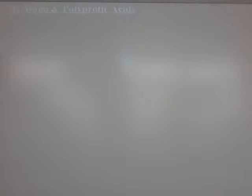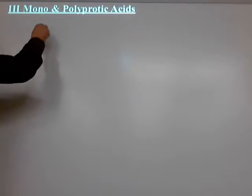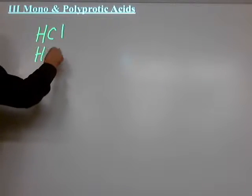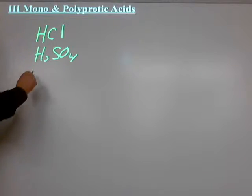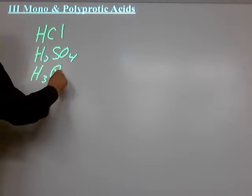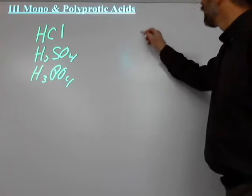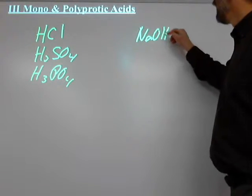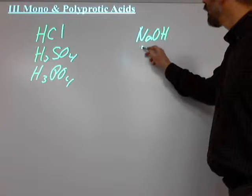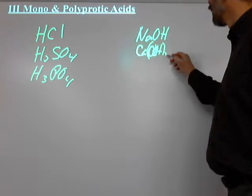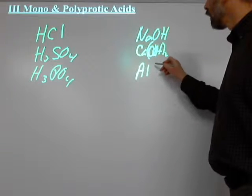Let's look at some of the possibilities for an acid or a base. For acids, we could have the simplest — hydrochloric acid, the one we've used most often. But we could also have sulfuric acid and phosphoric acid. For bases, same basic idea: we could have NaOH, the most common, but also calcium hydroxide and aluminum hydroxide.